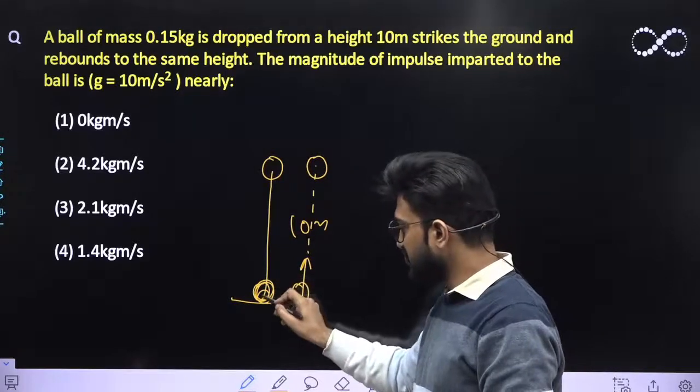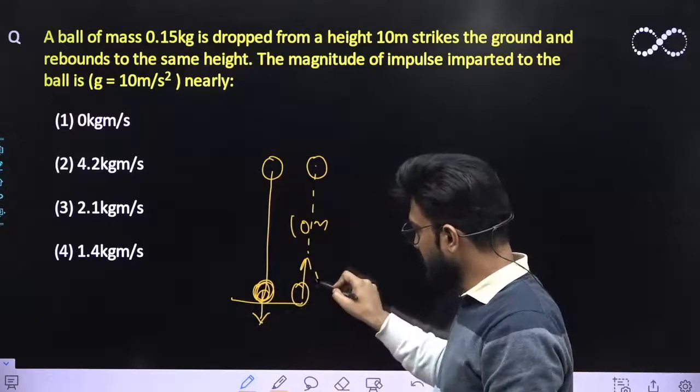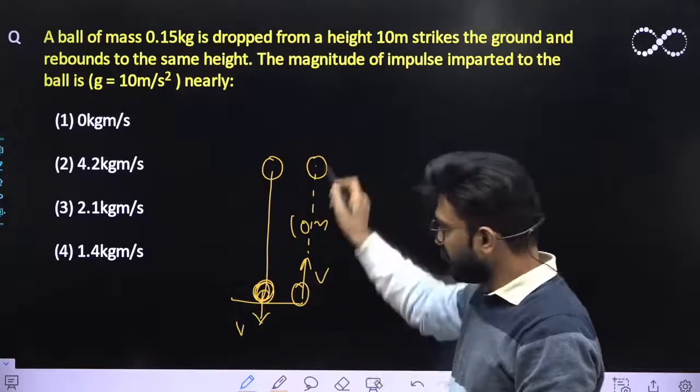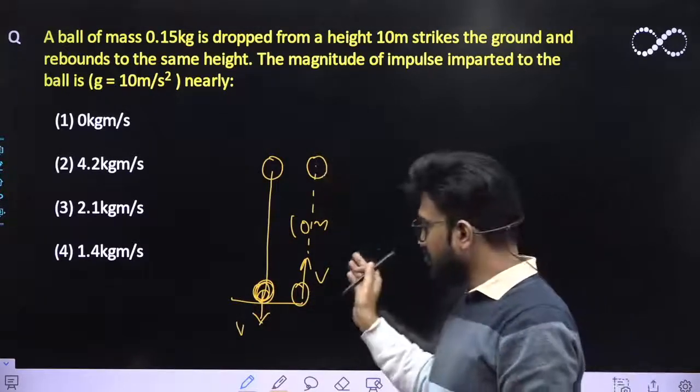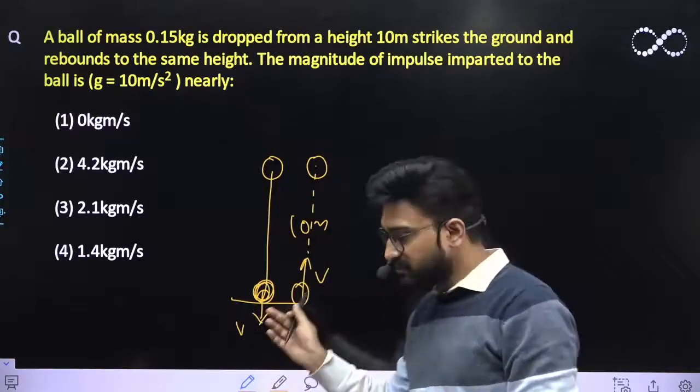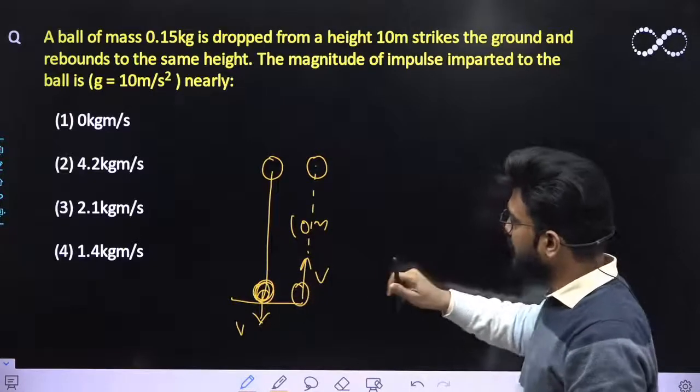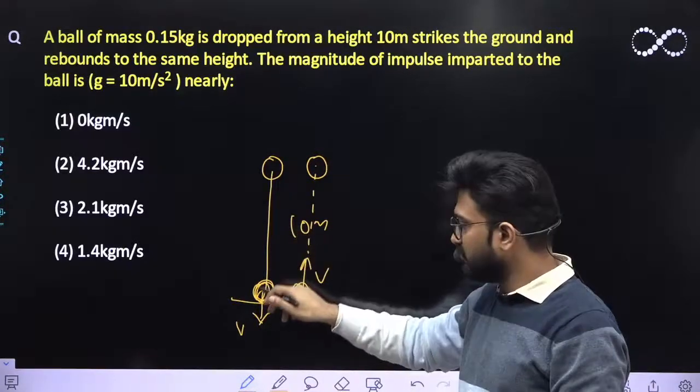That means the speed with which it will hit the ground must be equal to the speed with which it will rebound. The rebounding speed must be equal to the speed with which it will fall down on the ground. It is falling from the height of 10 meters, so what would be the speed?